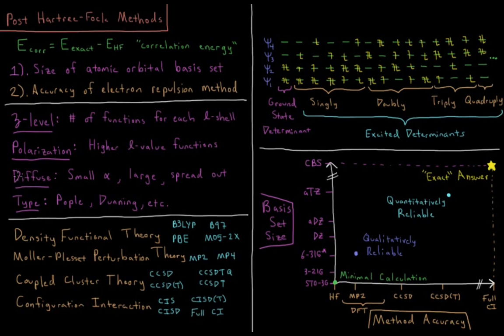Next up would be diffuse functions, so things where our exponent in our atomic orbitals is very small, which makes our basis function very large and very spread out. So a diffuse function would help to capture any effects that are happening far away from the atom, diffuse functions being things that are very large, very spread out.